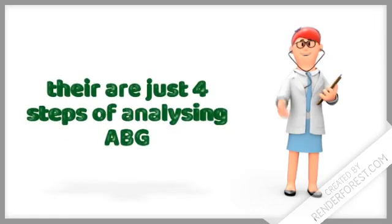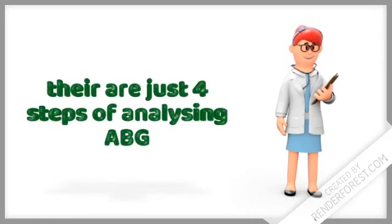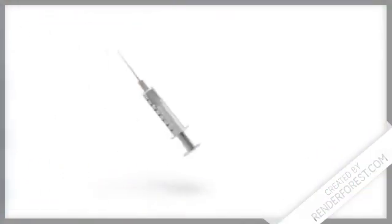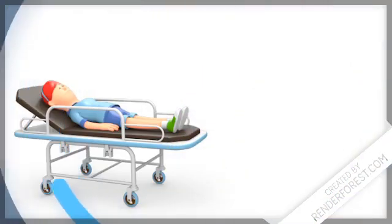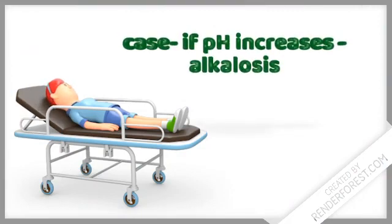Hi everyone, today we are going to learn about arterial blood gas analysis. The normal pH value is 7.35 to 7.45. If the pH increases above 7.45, then alkalosis happens.